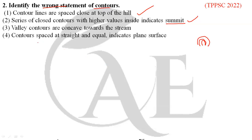Statement 3 — valley contours are concave towards the stream — this is the wrong statement. Statement 4 — contour lines spaced straight and equal indicate a plane surface — this is correct. So statement 3 is wrong: valley contours should be convex towards the higher ground surface, not concave towards the stream.